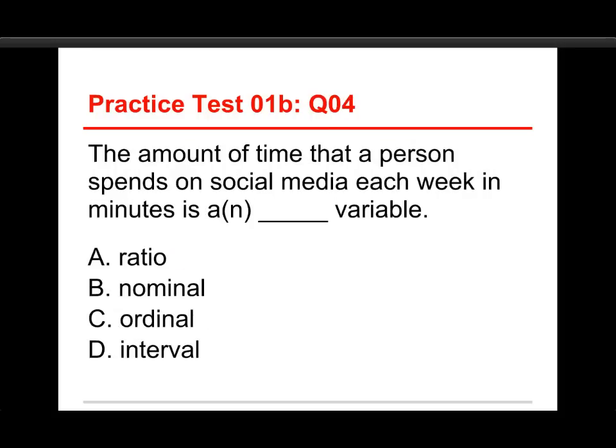Number four: the amount of time a person spends on social media each week in minutes is a blank variable. The choices are ratio, nominal, ordinal, or interval. The answer is A, ratio. Minutes starts at zero and goes up — one minute is half as much as two minutes, which is half as much as four minutes. When you can say twice as much or half as much, that's a ratio.